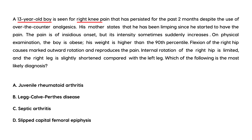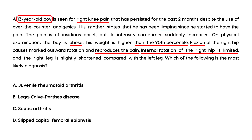Clinical vignette: a 13-year-old boy is seen for right knee pain persisting for two months despite over-the-counter analgesics. His mother states he has been limping since the pain started. The boy is obese — weight above the 90th percentile. Flexion of the right hip causes marked outward rotation and reproduces the pain. Internal rotation of the hip is limited and the right leg is slightly shortened. This is all classic for Slipped Capital Femoral Epiphysis.